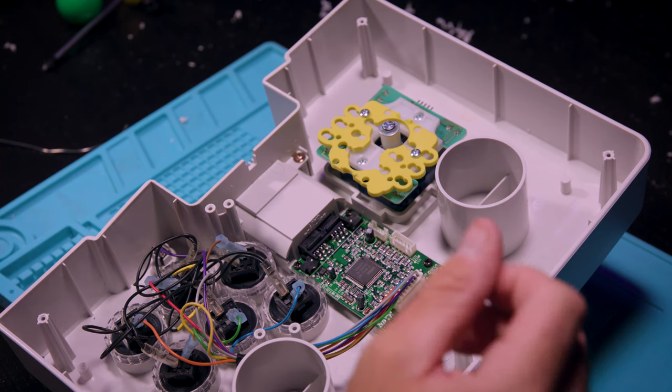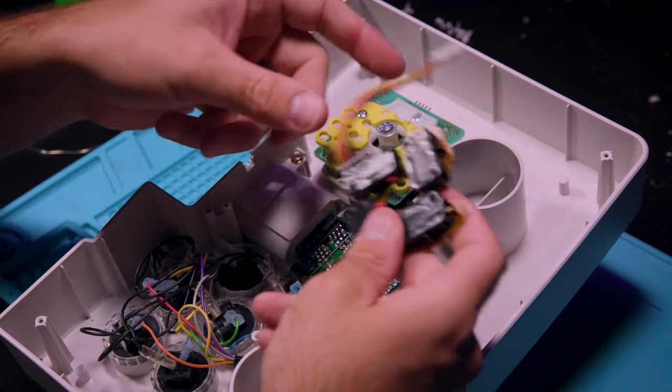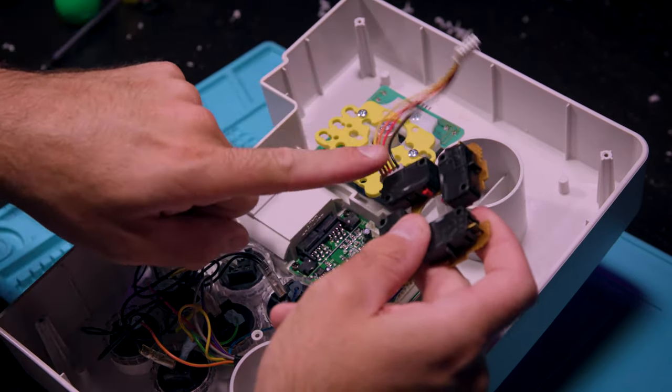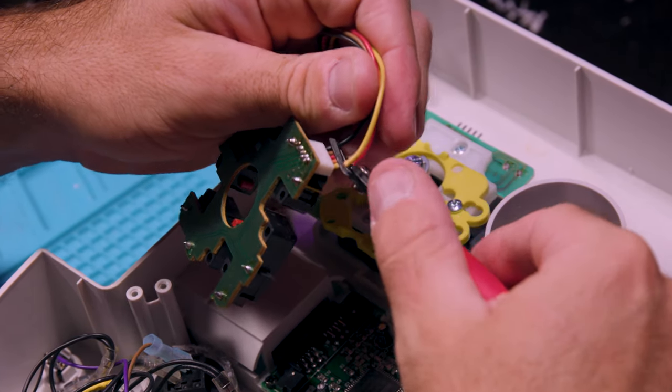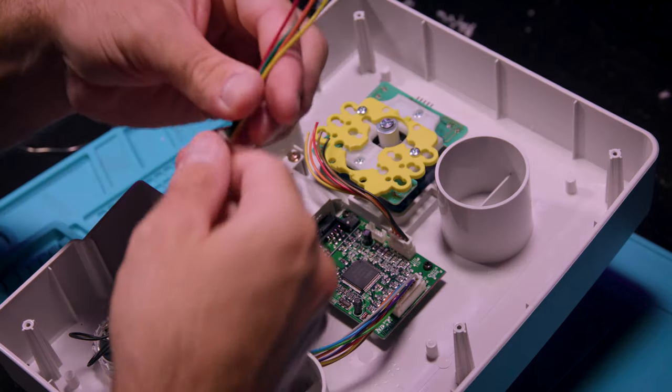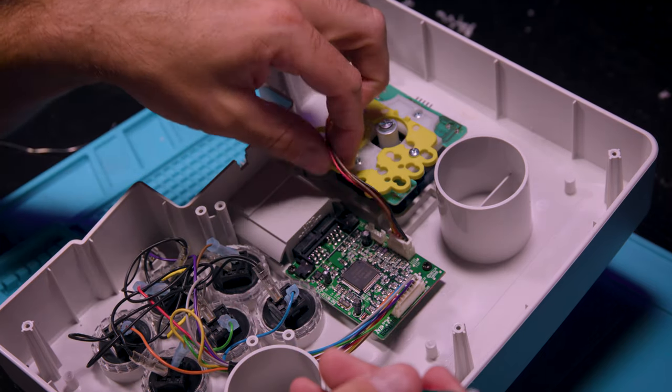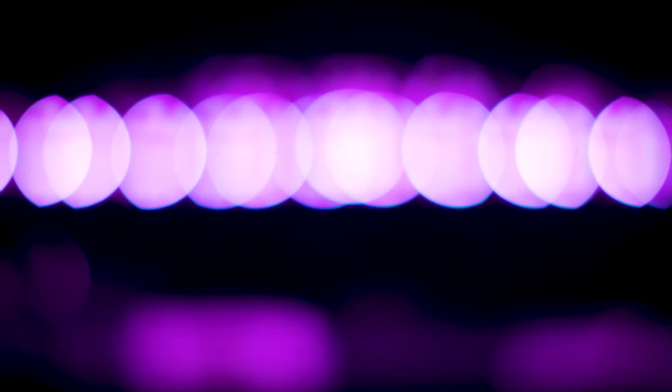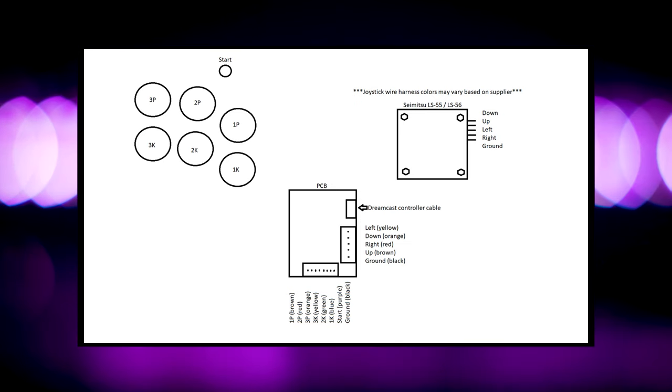Now it's time for the joystick. We need to bring back that original harness that we removed from the very beginning stock joystick, bring that back, and go ahead and clip the wires at the base of where it connects to that old joystick. Now we need to take the joystick harness that came with your new joystick, in this case the LS55, and connect it to the old joystick harness that came with the Agitech stick.